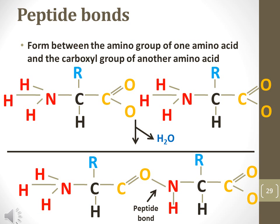A peptide bond is formed by removing two hydrogen molecules from the nitrogen atom of the amino group and an oxygen atom from the carboxyl group. The hydrogen and oxygen combine to form water and a peptide bond is formed between the amino acids. This type of synthesis is known as dehydration synthesis.